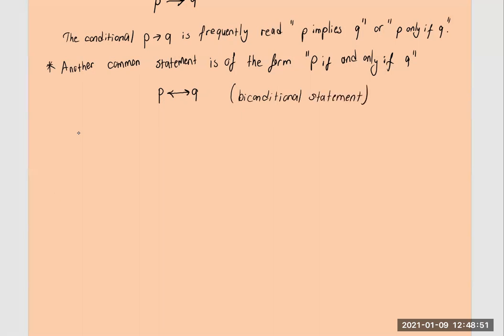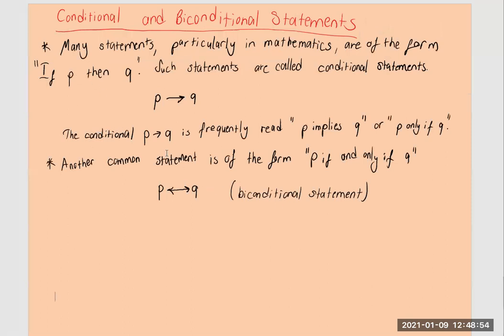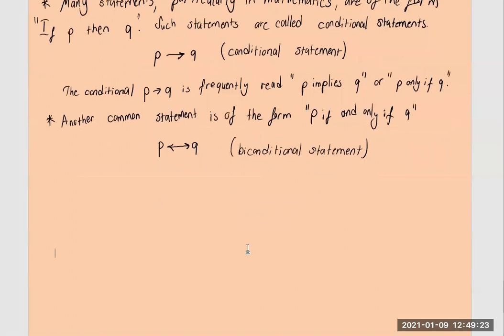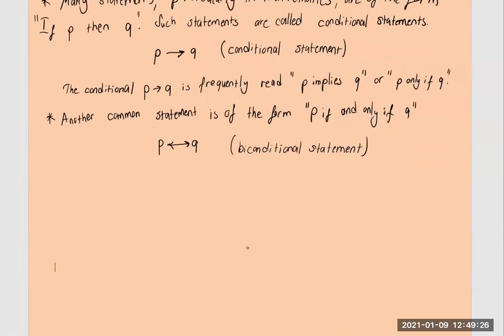So we have two statements right now: conditional statement and biconditional statement. Let's look at their truth table for using the p and q conditions. We have the truth table.